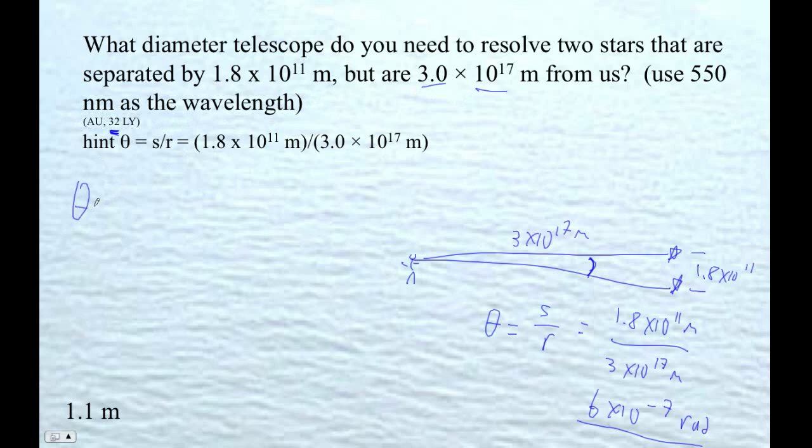Now we're going to use the Rayleigh formula: 1.22 times the wavelength divided by the aperture. We want to solve for D, so D is going to be 1.22 lambda over theta.